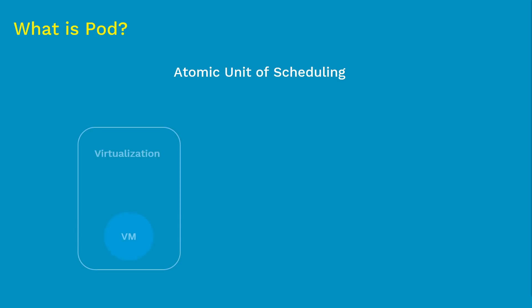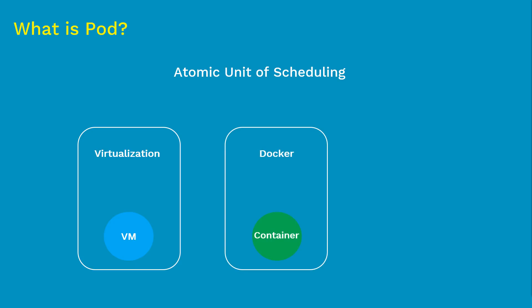When you get into the virtualization world, the atomic unit of scheduling is the virtual machine. If you want to deploy any app, you need to put your code and related config inside the virtual machine and then deploy it. When it comes to the containerization world, generally you use containers, and in the same way we use pods in the Kubernetes world. Virtual machines, containers, and pods are different runtime environments using which we deploy applications. At a high level, pods are the basic unit of scheduling in Kubernetes.